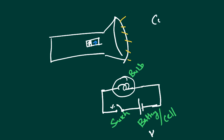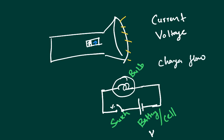When the electrons flow, we call it current. If the charges flow, we call it current.